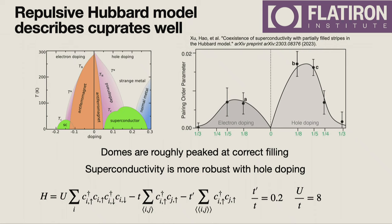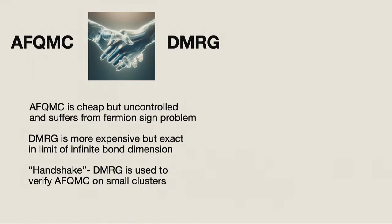This paper really shows the Hubbard model is describing the physics of the cuprates well. It uses AFQMC and DMRG — methods more established than deep neural networks. AFQMC is cheaper but uncontrolled due to the fermion sign problem, whereas DMRG is more expensive but accurate when extrapolated to infinite bond dimension. The strategy is to use DMRG to verify AFQMC on smaller clusters, then use AFQMC to reach bigger clusters — that was the strategy employed in that paper.